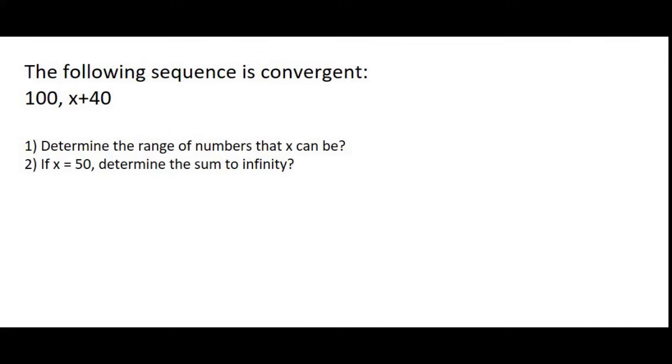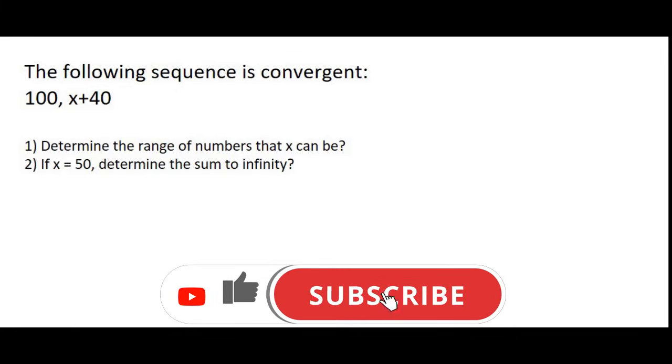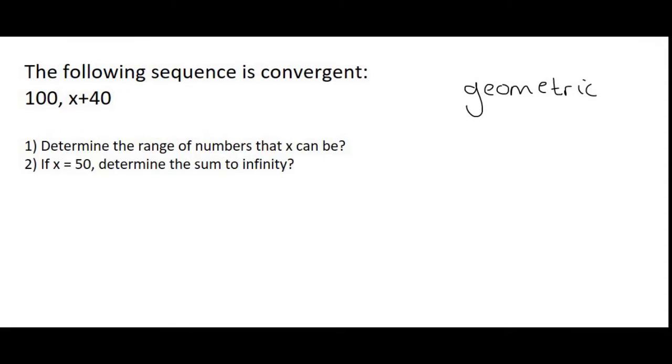Now we said that a series can only converge if it is geometric and the numbers need to get smaller and smaller and smaller. So we said that the ratio has to be some number between minus 1 and it must be less than 1. But let's forget about all the maths for now and let's just think about this logically.